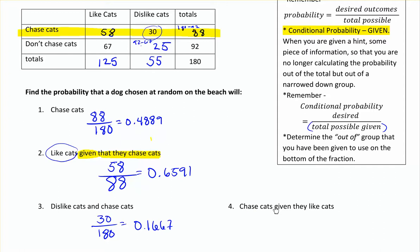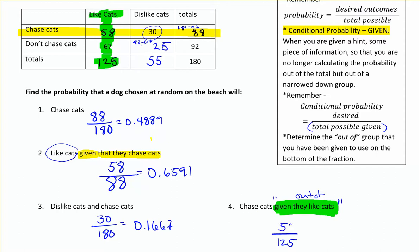Number four: chase cats given that they like cats. So again, we've got a hint — given that they like cats. I'm going to use my highlighter to figure out what's the group of dogs that like cats. Out of that group, how many of them chase cats? My given becomes my 'out of,' and that goes on the bottom. The probability that they like cats is 125 total. Given that information, the probability that they chase cats is 58 out of 125, and you get 0.464.